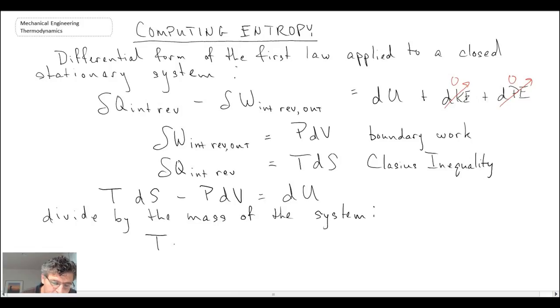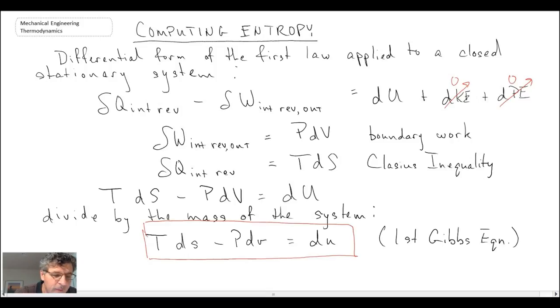And when we do this, the capital S is going to become a little s. We then have specific volume and we have internal energy on a per unit mass basis. And we will call this the first Gibbs equation. And we'll come back to that equation in a couple of moments.